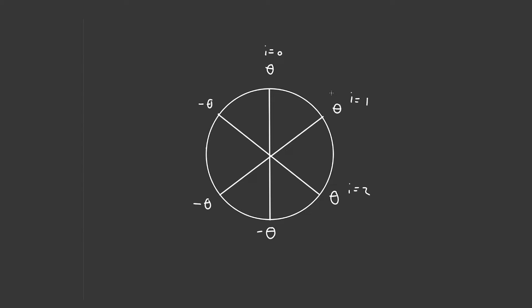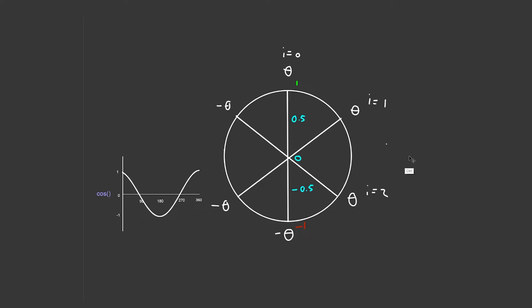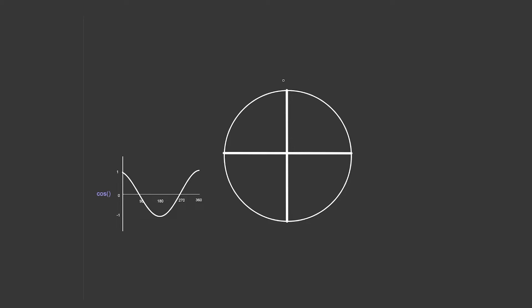We know that if this is one over here and minus one over here, then anything in between is a direct interpolation between the two. So if we have one over here and minus one down here, everything in between we can figure out. The middle point is zero, halfway between would be 0.5, and halfway between here and minus one would be minus 0.5. So how does it help us knowing that this is just a range between one and minus one? Well, if we look at a cosine graph, we know it goes from one to minus one. So it makes sense that when we want to calculate how our points move up and down these lines, we would use cosine.